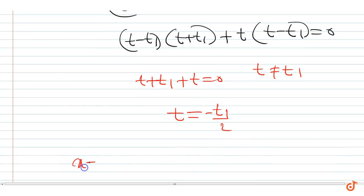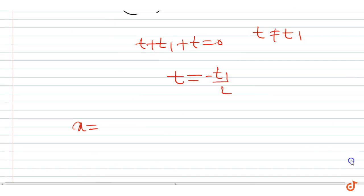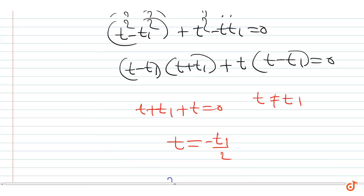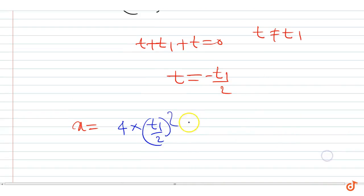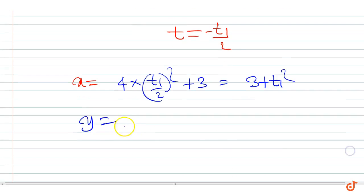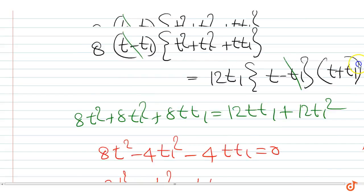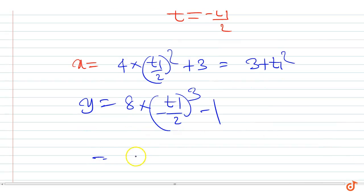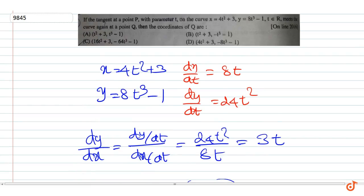Therefore the coordinates are: x is equal to 4t squared plus 3, that is 4 into t1 by 2 whole squared plus 3, equal to t1 squared plus 3. y is equal to 8t cubed minus 1, that is 8 into minus t1 by 2 cubed minus 1, equal to minus t1 cubed minus 1. Therefore the correct option is option B.